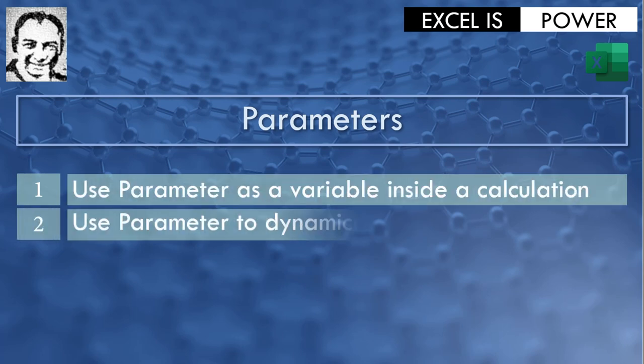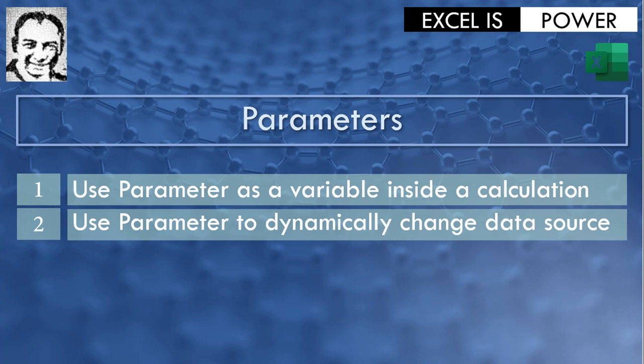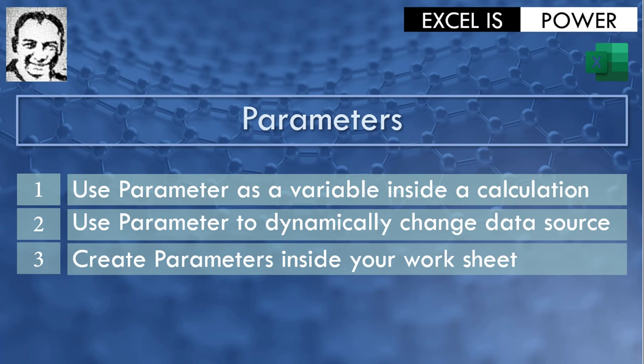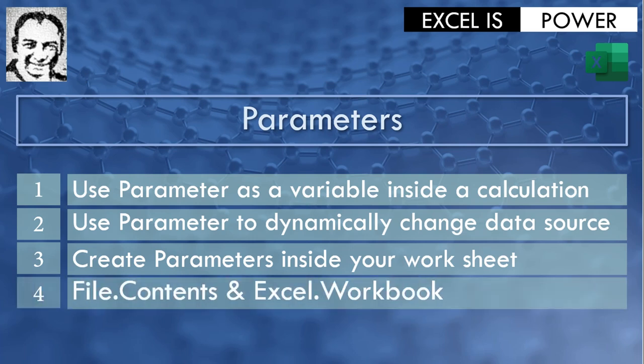We'll also see how to use a parameter to dynamically change the source of our data. We can also create our own parameters inside our worksheet instead of inside the Power Query editor itself. Finally, we are going to look at two M functions: File.Contents and Excel.Workbook.